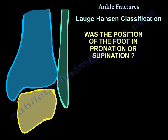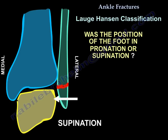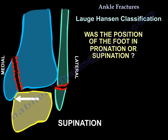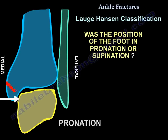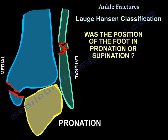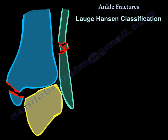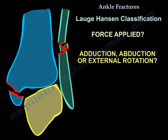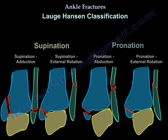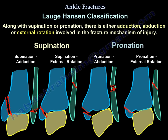The Lauge-Hansen classification depends on two things: the position of the foot — was it pronated or supinated — and the force applied. If the foot is supinated, the injury will start at the lateral side; if pronated, it starts at the medial side. The force applied can be adduction, abduction, or external rotation. These two components give us four types in the Lauge-Hansen classification.